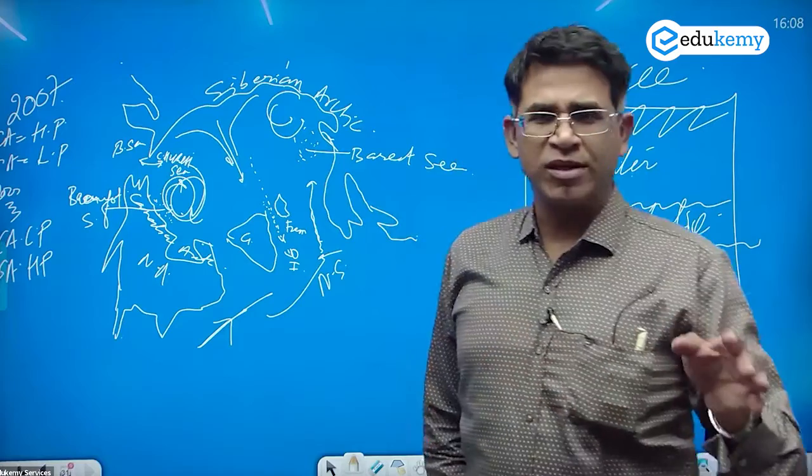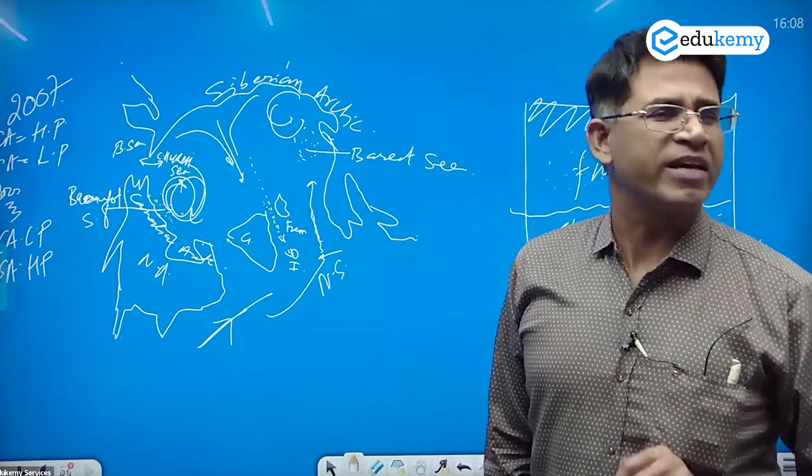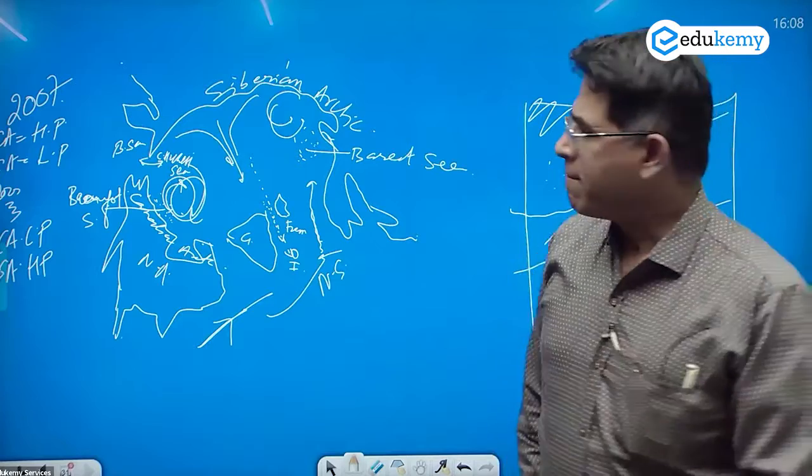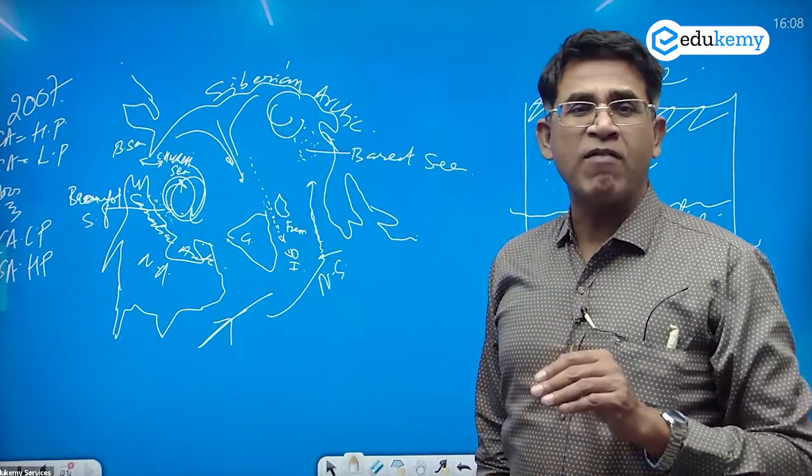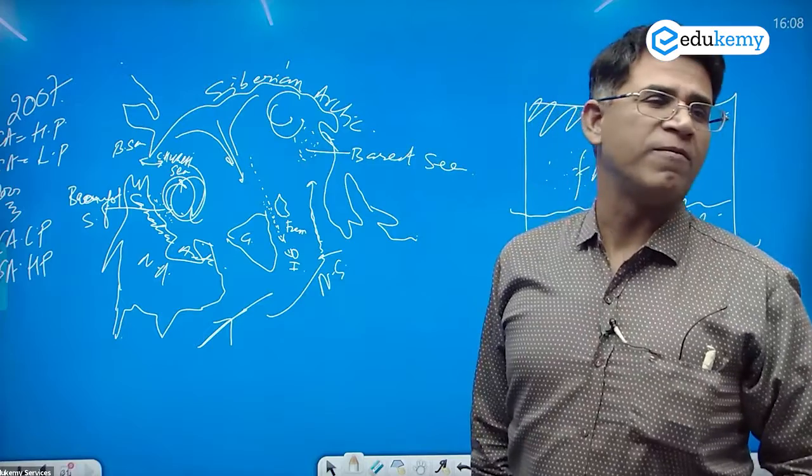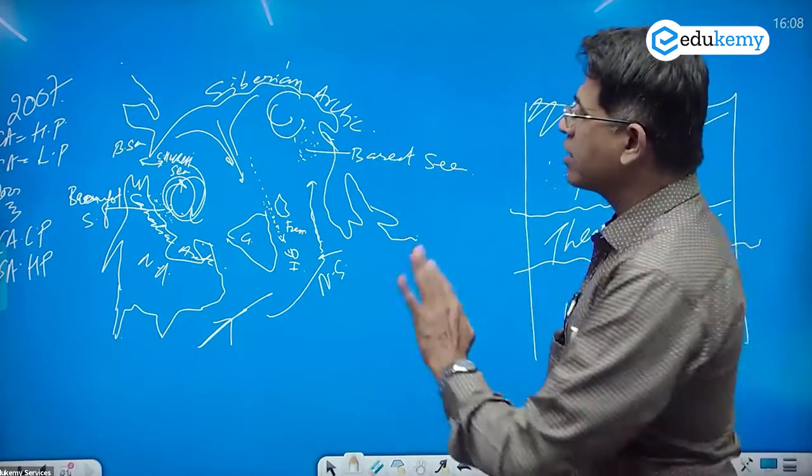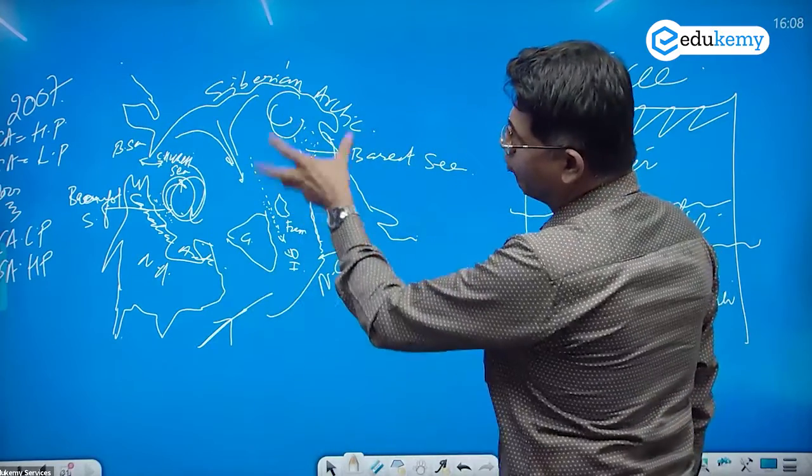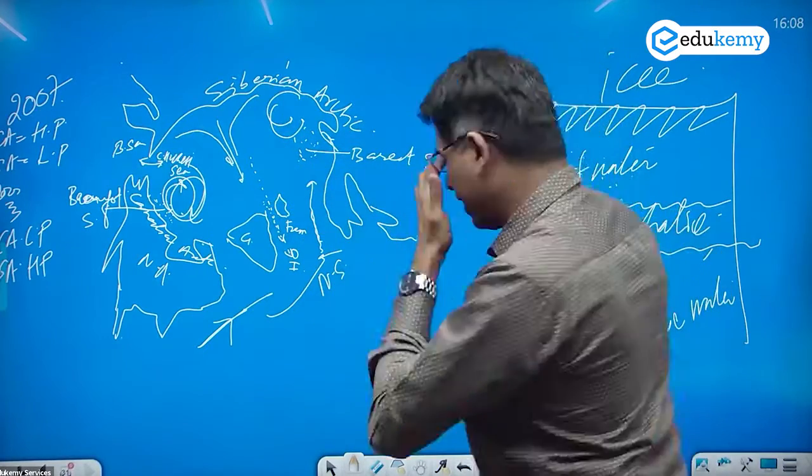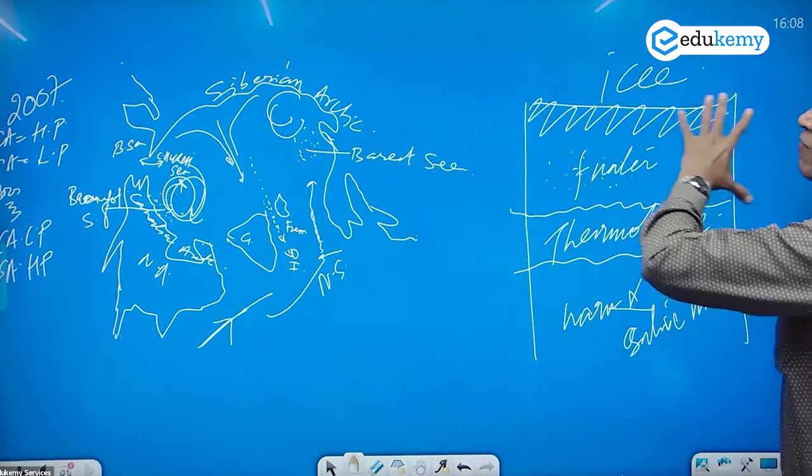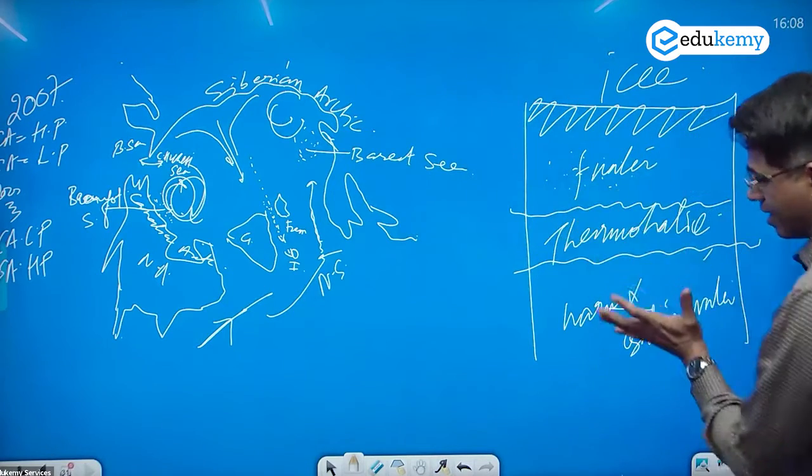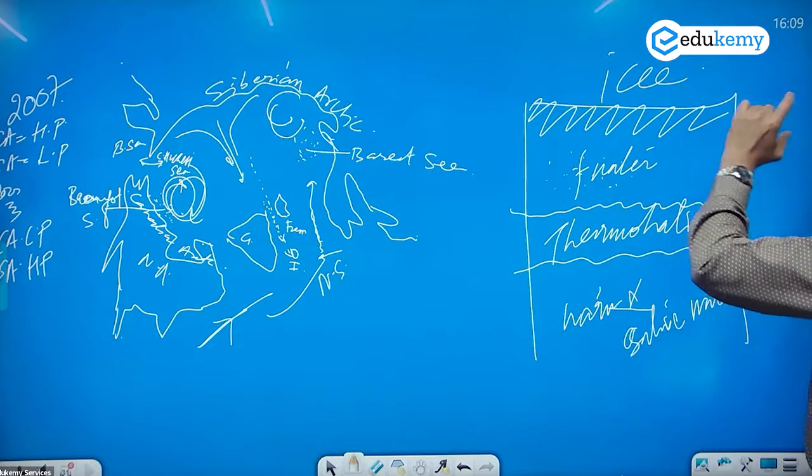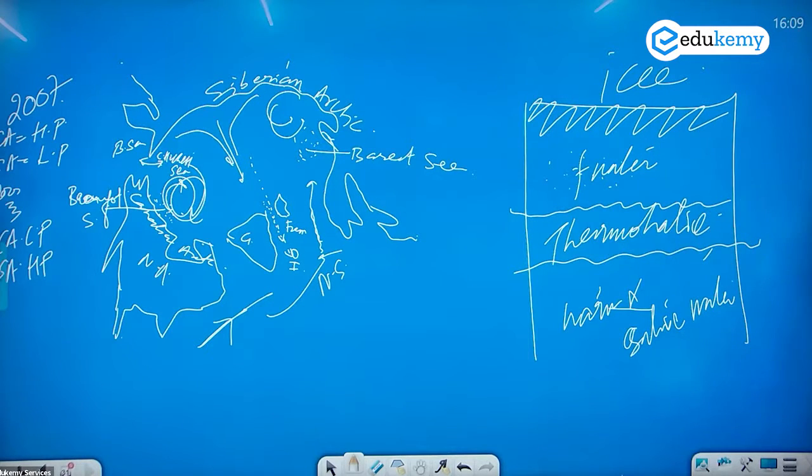The arctics are getting more and more warmer. But, jab yeh dipole change ho jaega, the problem will become even more severe now. Because the fresh water going towards this side will become less. This water is becoming more and more warmer here. This warm water, because yahan par fresh water kam ho raha hai. Now, this warm water will start to rise up now. When this rises, this will start to melt even faster. It's like a typical what's called as the positive feedback loops.